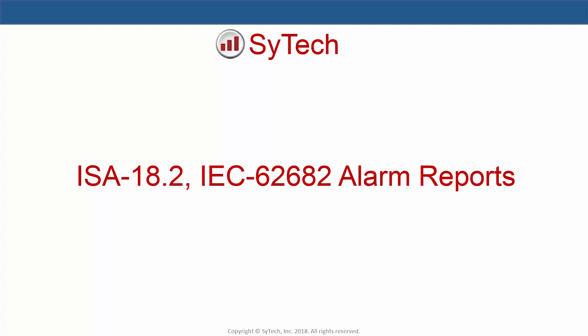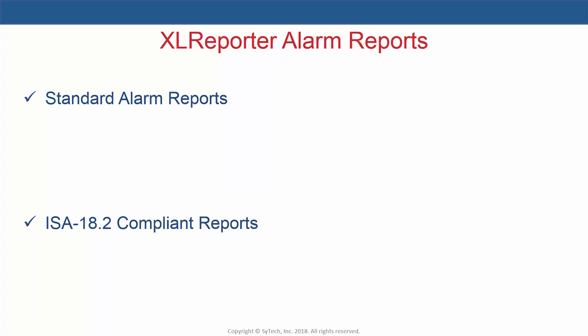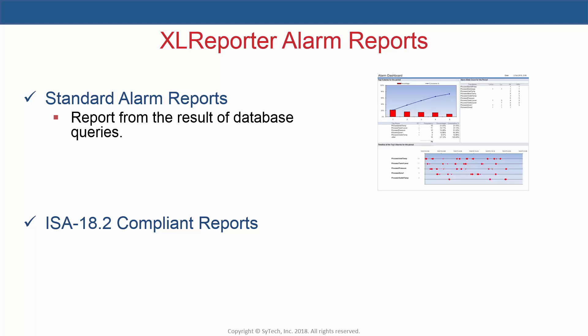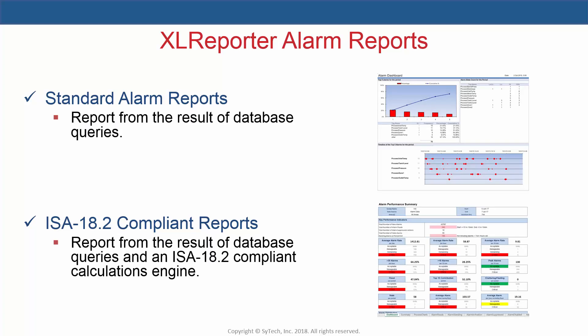This video discusses and demonstrates XLReporter's Advanced Alarm Management Connector, which generates reports that are compliant with the ISA 18.2 and IEC 62682 Alarm Management Standards. XLReporter produces two types of alarm reports: standard alarm reports and advanced ISA compliant ones. Standard alarm reports collect data from database queries, whereas advanced reports process results through a calculation engine developed specifically for ISA 18.2 compliance.